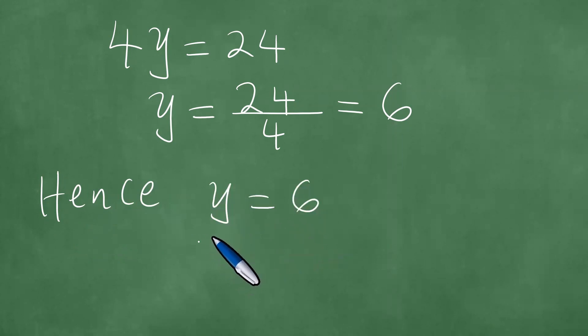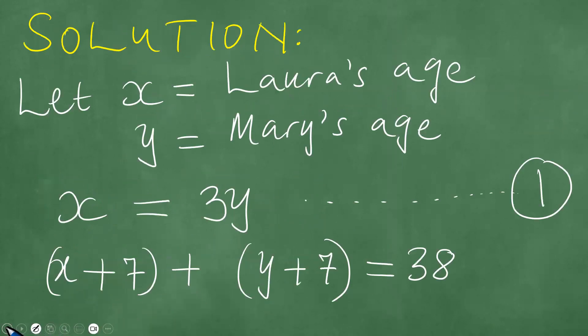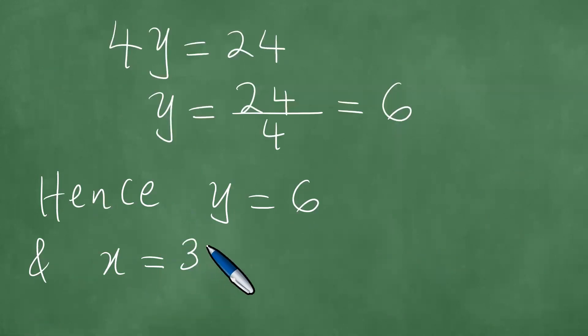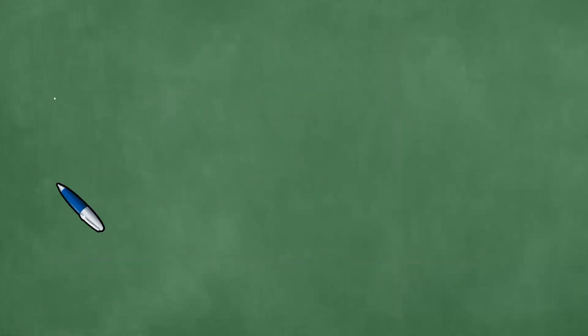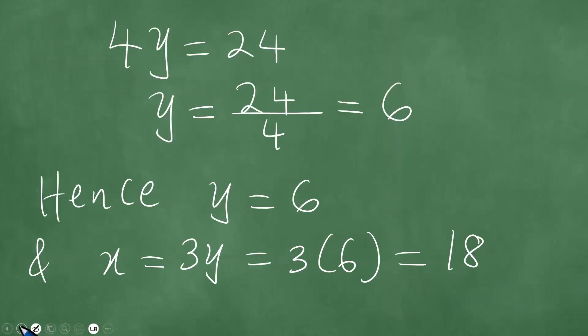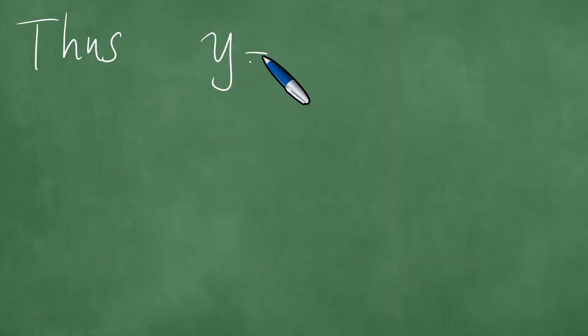And x, we remember x is 3y, x equals 3y in the first equation. So now we remember this, and we put 3y, which is 18 like this. Thus, y equals 6, and x equals 18.